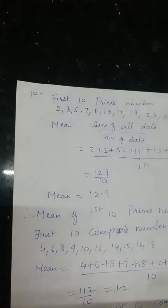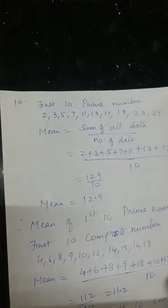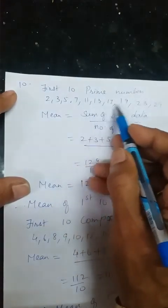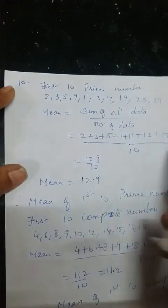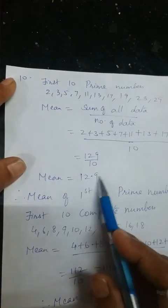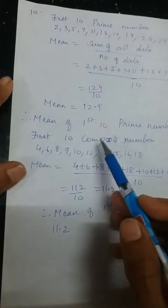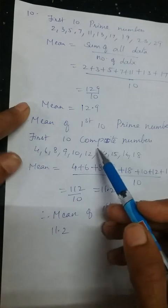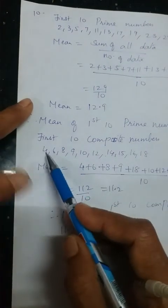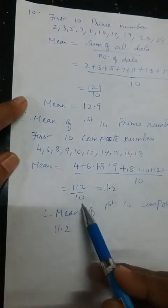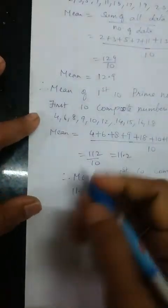The tenth one — find the mean of the first ten prime numbers and first ten composite numbers. For prime numbers: add all of them, divide by 10, you get 12.9. For composite numbers — composite numbers have more than two factors — the smallest is 4. Write the first ten composite numbers, find the total, divide by 10 for the answer.